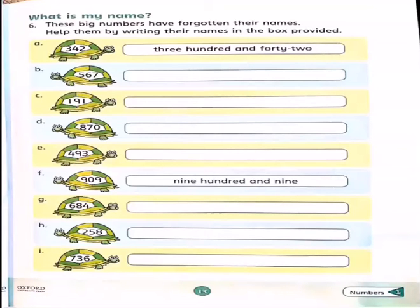The topic is what is my name. Question number six says these big numbers have forgotten their names. Oh, help them by writing their name in the box provided. In part a, there is written 3-4-2.